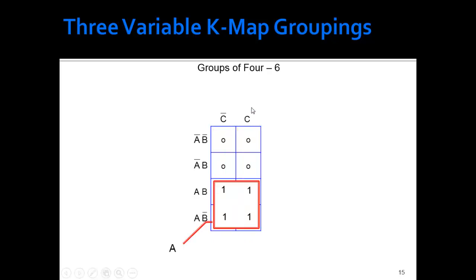This one would be C. That term would be A, because B changed here as I went from here to here. And C changed as I went from here to here. That would be B. That would be not A. This one would be not B. And this would be the one group of eight that would be one.